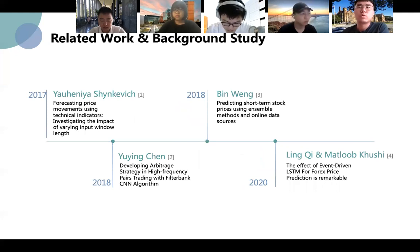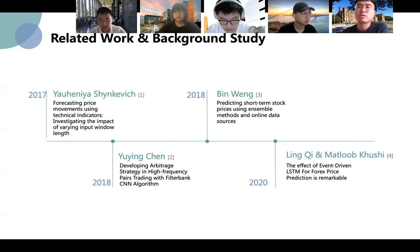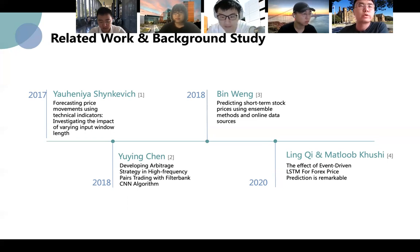Before we started the project, we reviewed plenty of papers and the following literature was particularly helpful to us. Sinkovich's study showed that using technical indicators as features can improve the model performance, and he also found the number of past timestamps used in the model have a huge influence on model performance. Chen is the first person to propose that deep learning models have a better effect than traditional machine learning models in solving nonlinear financial data. One study concluded that ensemble learning can improve the prediction accuracy, which is also the reason why we finally adopted stacking. Lin and Dr. Kuchy's papers inspired us a lot and let us know the importance of feature engineering construction.